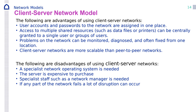The disadvantages of client-server: you need to train a dedicated person, so it's more expensive. Also the server is expensive — it should have more RAM, more hard disk space, more speed. And if the server is down, the network is down — if your email server is down, you cannot access email. We call this a central point of failure. But we can overcome this by having redundancy — like a redundant email server or redundant file server.